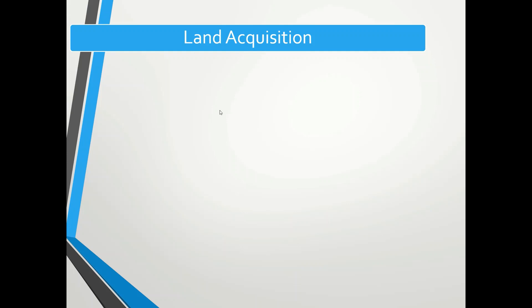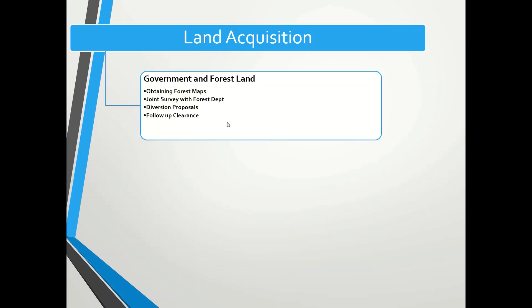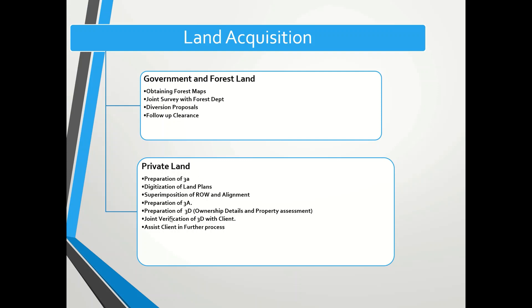There are two types of lands: one is government and forest land, and the other is private land. These are the two important types of land we need to acquire for the development of a road project. I'll make one separate video about government and forest land, and right now I have prepared for private lands only.